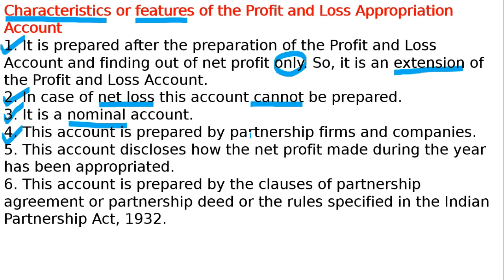Characteristic four: this account is prepared by partnership firms and companies. Characteristic five: this account discloses how the net profit made during the year has been appropriated. Appropriate means keeping aside. This account is prepared by the clauses of a partnership agreement or partnership deed, and the rules specified in the Partnership Act 1932.